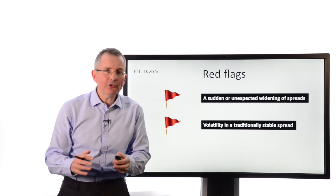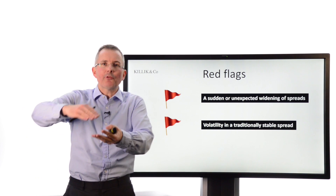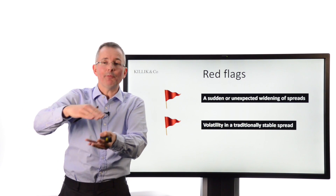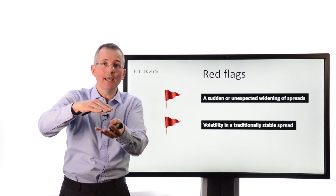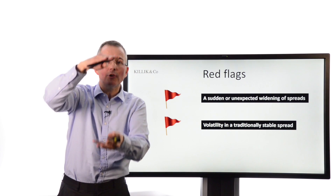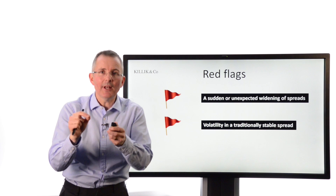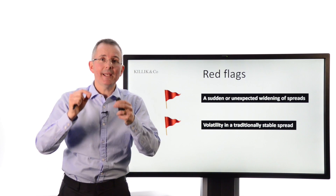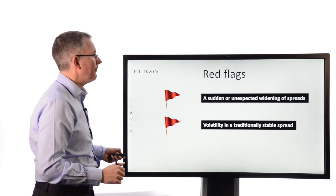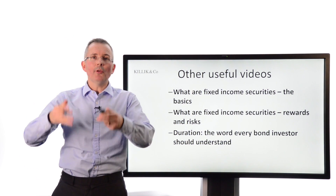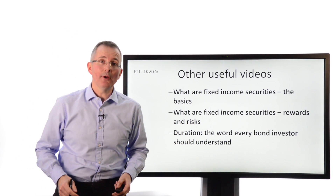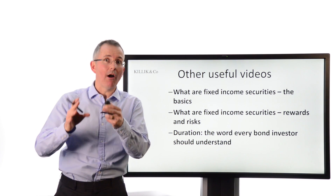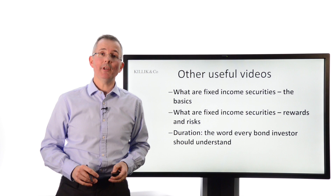Another red flag is volatility in a traditionally stable spread relationship. If the spread between two bonds has been relatively stable and suddenly starts to get very volatile — concertinaing in or out — that volatility is often a warning sign, not just in this part of the market but in any part. We'll cover this in more depth in future videos, but that gives you a flavour of a fairly key bond market red flag. There are other red flags coming up in future videos too.